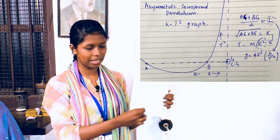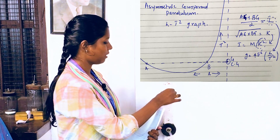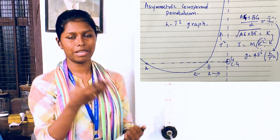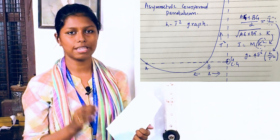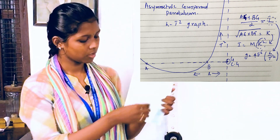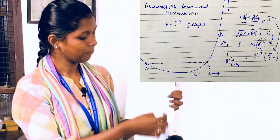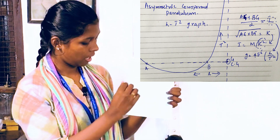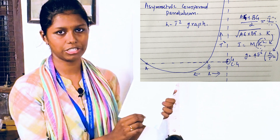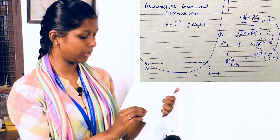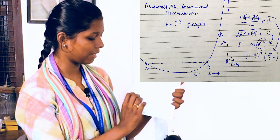We have a graph for the asymmetric compound pendulum. We identify the center of gravity. We mark the horizontal and vertical axes. This gives us the radius of gyration. The parallel axis theorem is then applied.